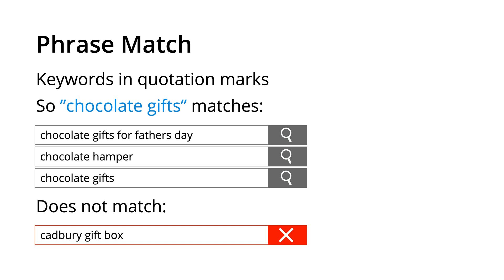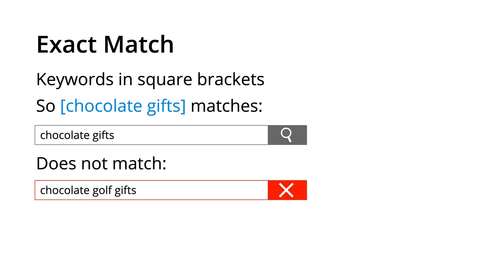The next match type is phrase match. This is where we put the keywords we're bidding on inside quote marks. This tells Google Ads that we want those words to be included in what someone is searching for, or that someone should be searching for something with the same meaning. For example, "chocolate gifts" in quotes can match chocolate gifts for Father's Day, chocolate hamper, and chocolate gifts. Phrase match is more targeted than broad match, so our keyword will not match Cadbury gift box.